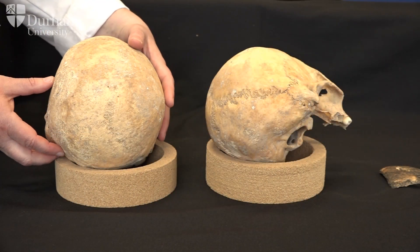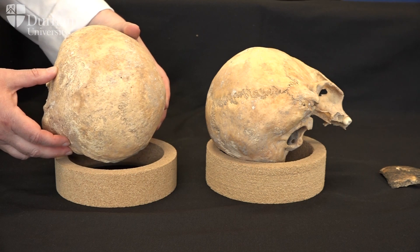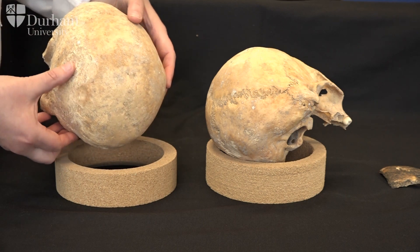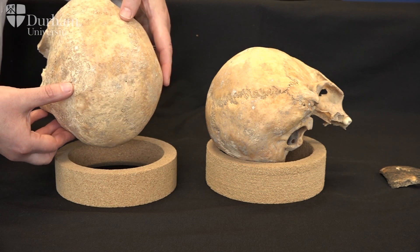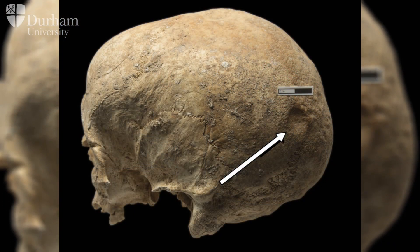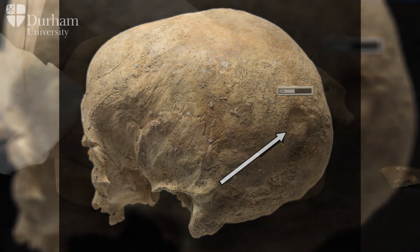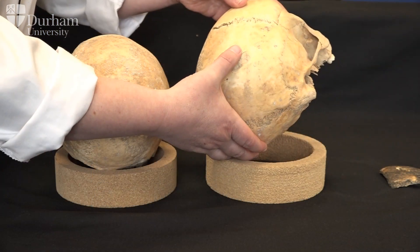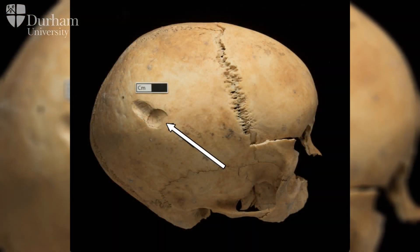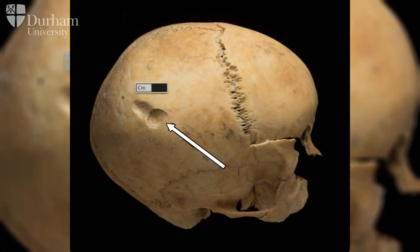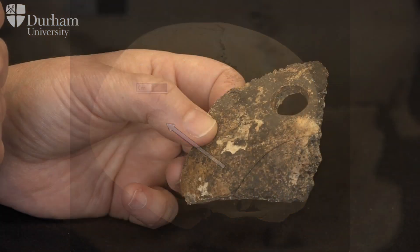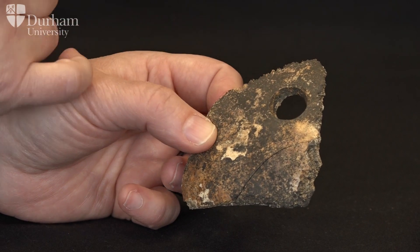First we have an example of ante-mortem blunt force trauma - it's quite hard to spot, but there are two injuries here and here: two depression fractures that are well healed. If we compare those to this individual, you can see the injury is peri-mortem - there's no evidence of any healing - and again it's caused through blunt force trauma.